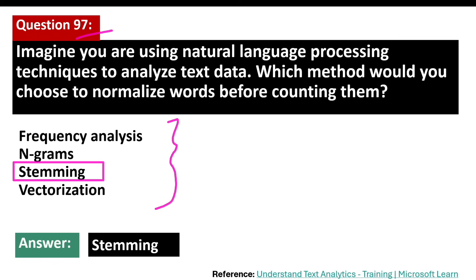For example, the words running, ran, and runner can all be reduced to run. By normalizing words in this way, stemming helps in processing and analyzing large amounts of text data more efficiently.